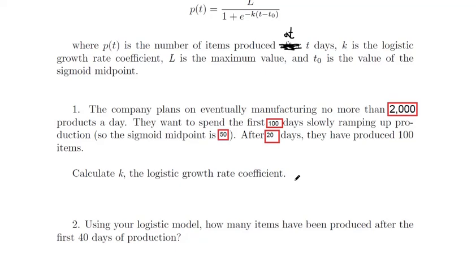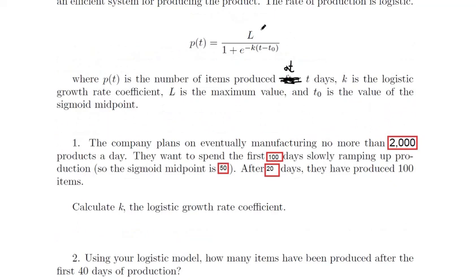They say the company plans to eventually manufacture no more than 2,000 products a day. So that means L is the maximum they're looking for. So our function is going to have 2,000 up here. We've got that exponential constant. We don't know k, that's something we're going to have to solve for. And then t is a variable that depends on what day you're talking about. For this particular problem, they want us to put in 20 for t, and that will equal 100 products. So on day 20, they have 100 products produced. And the sigmoid midpoint is 50.